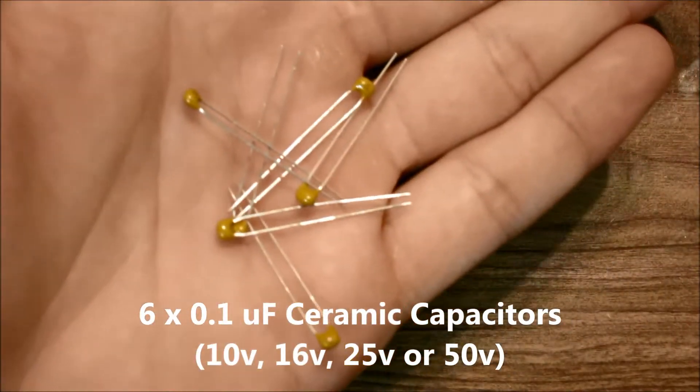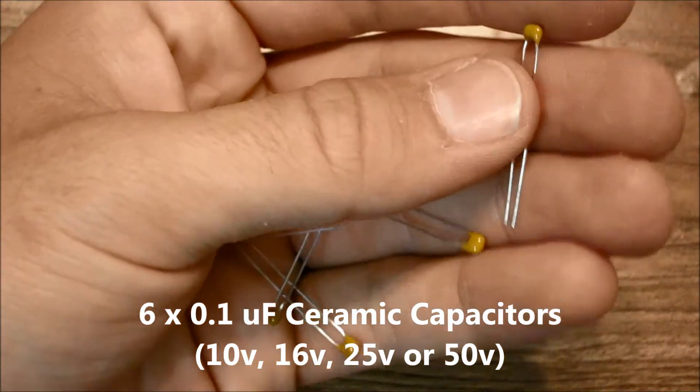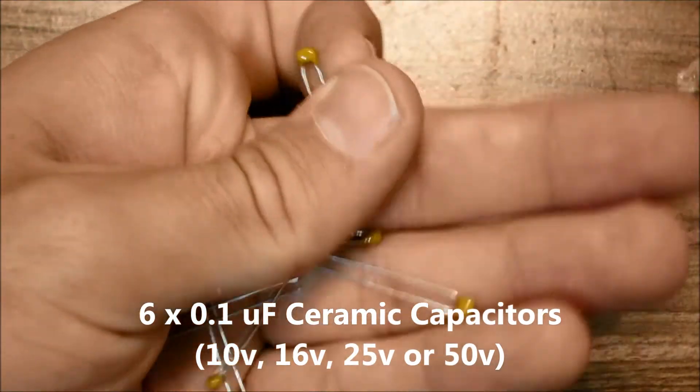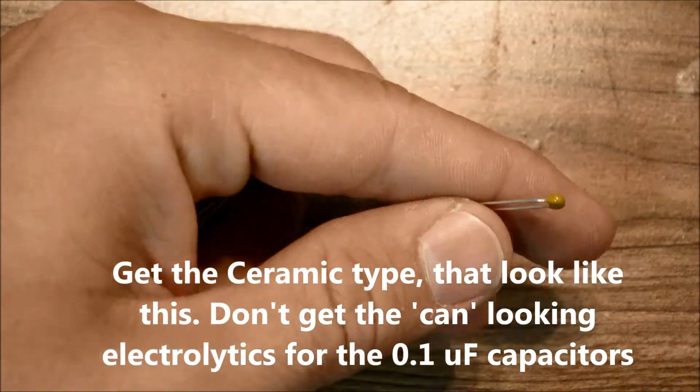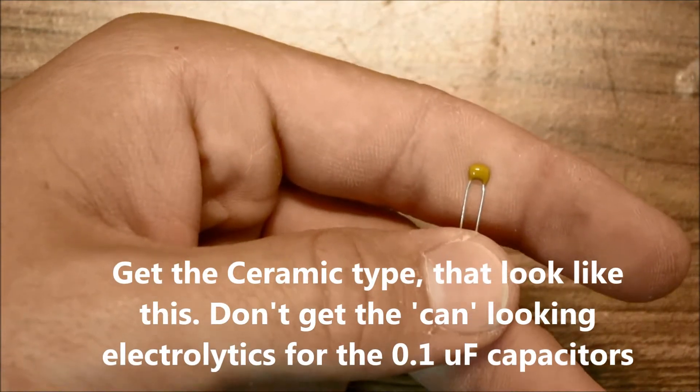You need 6, 0.1 microfarad capacitors. These could be 10 volts, 16 volts, 25 volts or 50 volts. Try to get the ceramic type so that they kind of look like this and not the electrolytic type for the 0.1 microfarad capacitors.